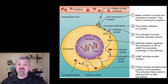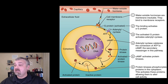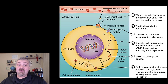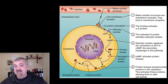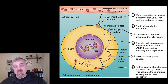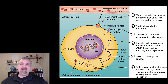A single hormone can have multiple effects in a cell. Thyroid hormone would be a great example — it can dock on the mitochondria and change how the mitochondria behaves, but it can also dock right on the DNA and change gene expression as well. So one hormone can have multiple impacts even in a single cell.